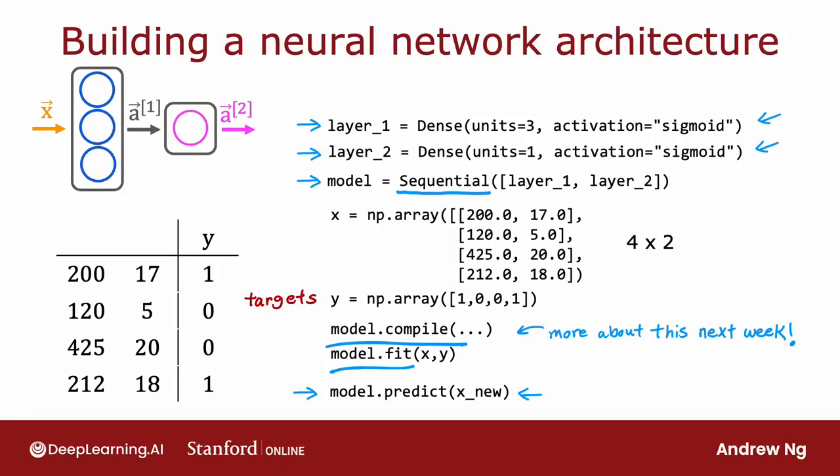So model.predict carries out forward propagation, it carries out inference for you using this neural network that you compiled using the sequential function.